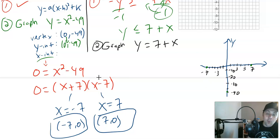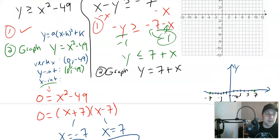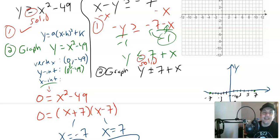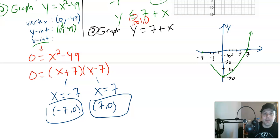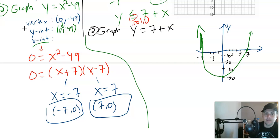Both graphs in this system will be drawn as solid lines since both inequalities have equals to. Draw the parabola as a smooth U-shaped curve through the vertex (0, −49) and x-intercepts (−7, 0) and (7, 0). Then for the second inequality, graph the line y = 7 + x — the y-intercept is 7 and the x-intercept is −7, so connect those points.